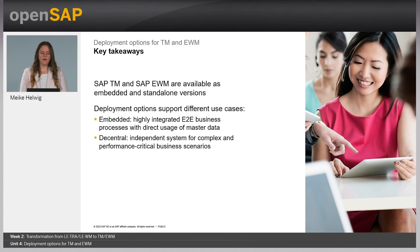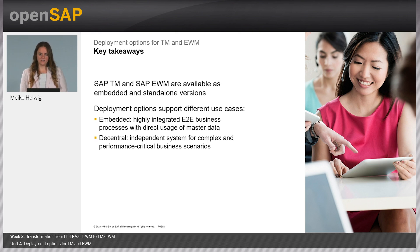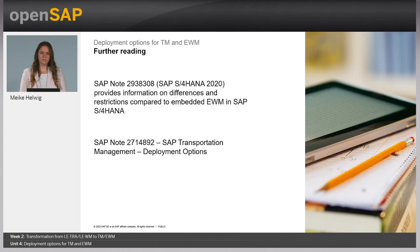To summarize today's session: we have two deployment options for SAP TM and EWM — embedded and standalone. Both versions have advantages and disadvantages. In an embedded setup, you have a highly integrated end-to-end process, full transparency, and direct master data reuse without switching systems. However, you are dependent on your S/4HANA system's downtimes. If you have very complex processes with high availability or performance-critical requirements, it may make more sense to choose Decentral EWM or standalone TM. Further reading is available in the referenced notes to help you make the right deployment decision.